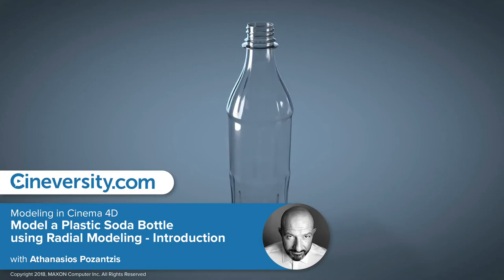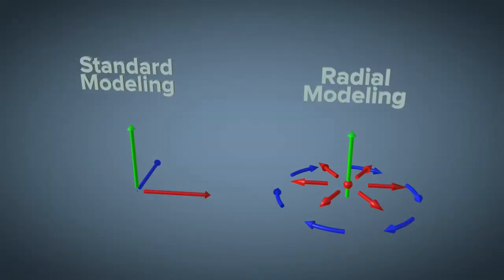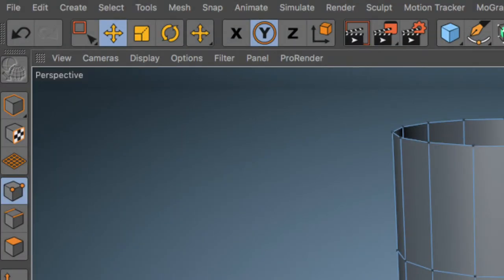In this series I will show you how to model a plastic soda bottle using a radial modeling technique. I will begin by explaining the geometric principles of radial modeling and then show how to set up the move, scale, and rotate tools so that you can model with ease.